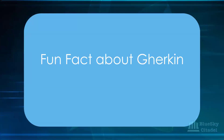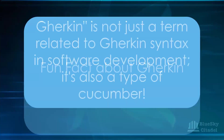One fun fact about Gherkin: it's not just a term related to Gherkin syntax in software development — it's also a type of small cucumber, sometimes pickled with vinegar and served as a snack. So Gherkin has a dual existence in both the software world and the culinary world. It's an interesting example of a word that has different meanings in different contexts.